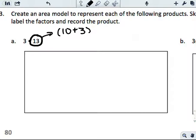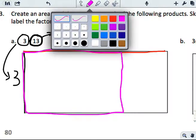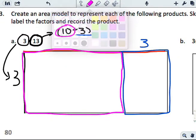When we're setting up this area model, area of a rectangle being length times width, we can take this side of 3 and make it the entire side of this rectangle. On the other side, if we take 13 instead of making the entire length, we can break it up into two parts. Let's say that the 10 part covers about this much, and then the 3 part covers about this much.